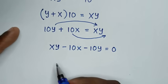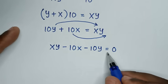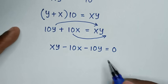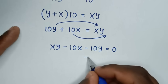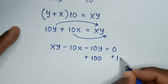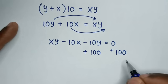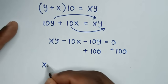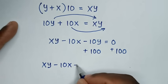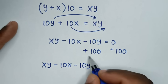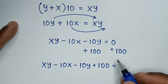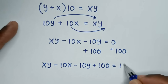To solve by factorization, we add 100 to both sides. So the equation becomes: xy minus 10x minus 10y plus 100 equals 0 plus 100, which is 100.